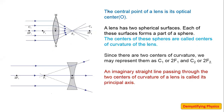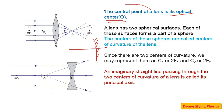Today we will discuss certain terms like optical center. We know what a pole is in a mirror — pole is the center of the mirror. Similarly, the optical center is the center point of the lens.